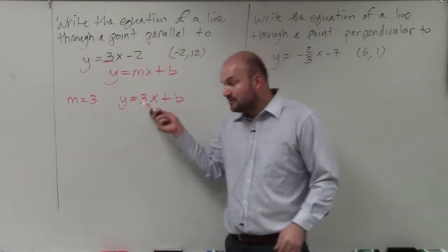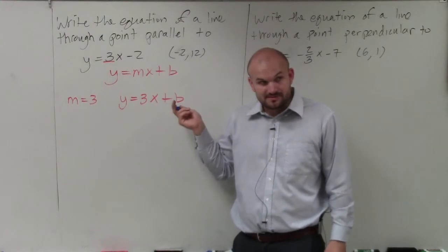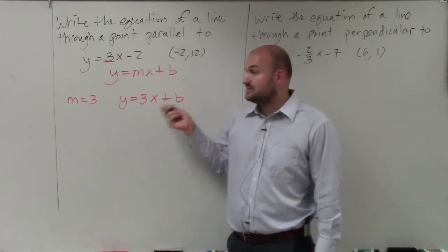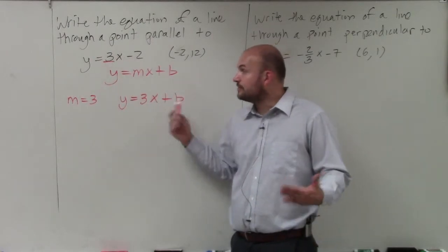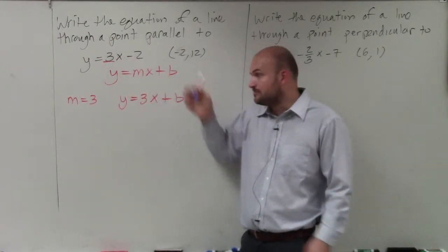So now, we know what the slope is, but we don't know what the y-intercept is. Some people will say, oh, it's negative 2. No, that's for this problem. We want to write a new equation that has the same slope, but goes through this point.